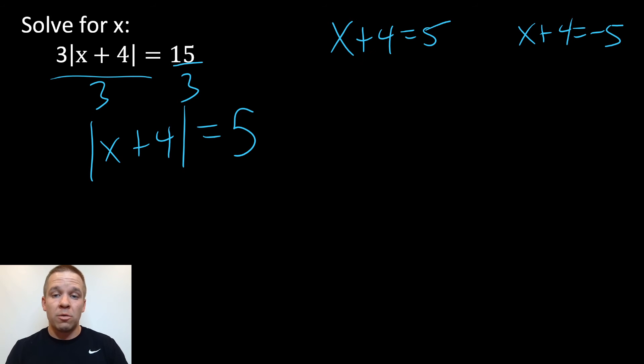Now, I'll just solve each individual equation by subtracting four on both sides. I'll get x equals positive one, and the same algebra occurs in the other one, subtract four, but I'm going to get x equals negative nine when I do that.